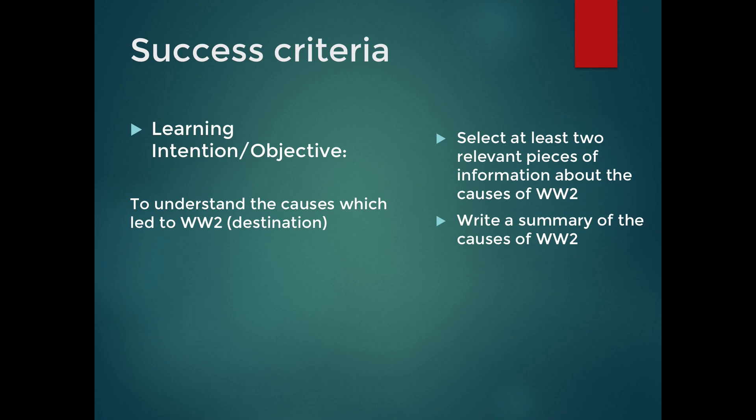Success criteria can also get progressively harder. You might move on to something such as: write a summary of the causes of World War 2, where students now pull all of their pieces of information together and create a cohesive paragraph or set of paragraphs. For students who require more challenge, you could have something such as: decide which of the causes of World War 2 could have been avoided — starting to stretch people's thinking so that they're now thinking critically, using their reasoning skills and skills of judgment.